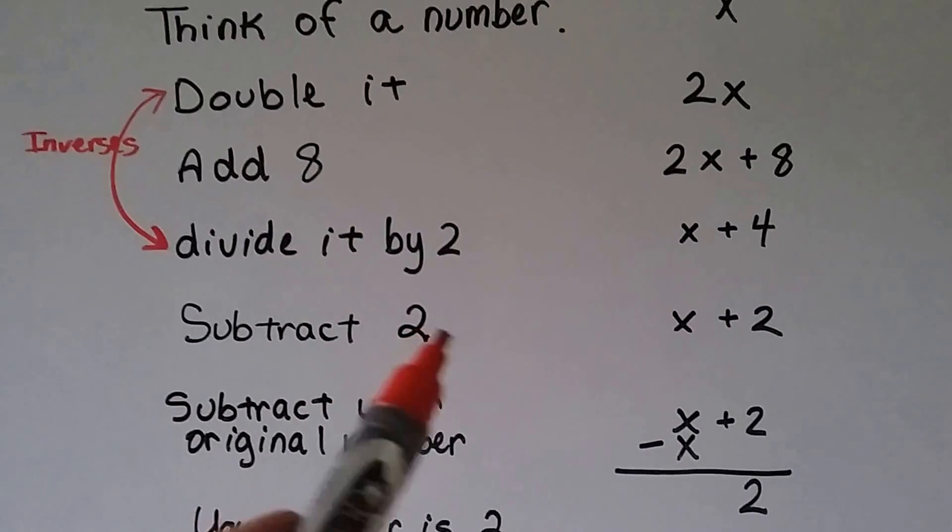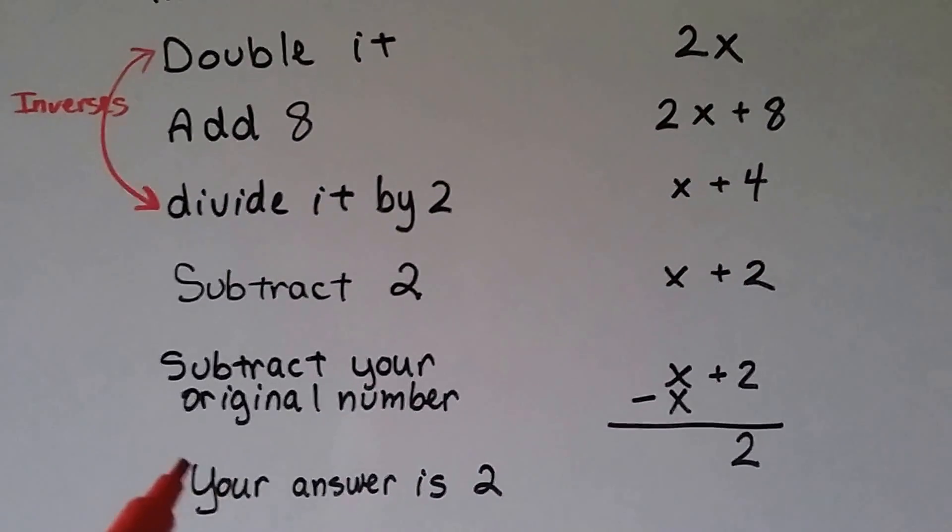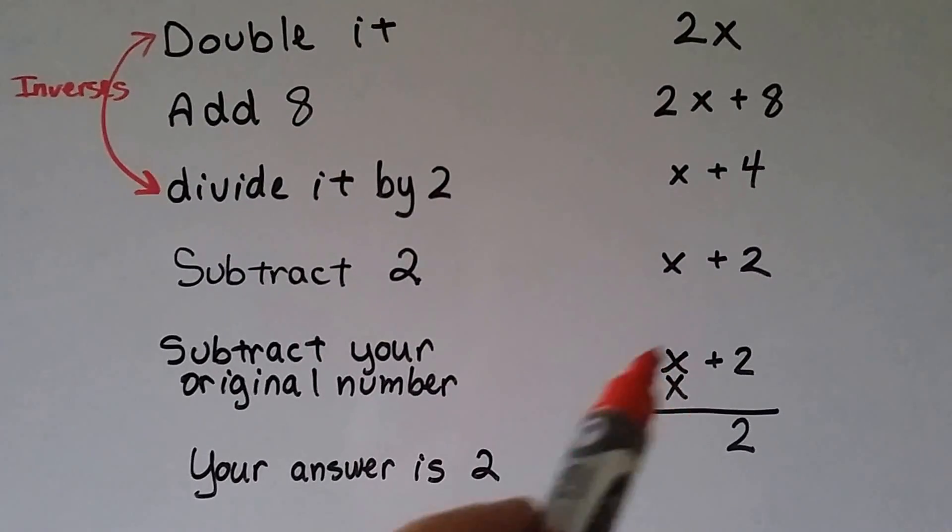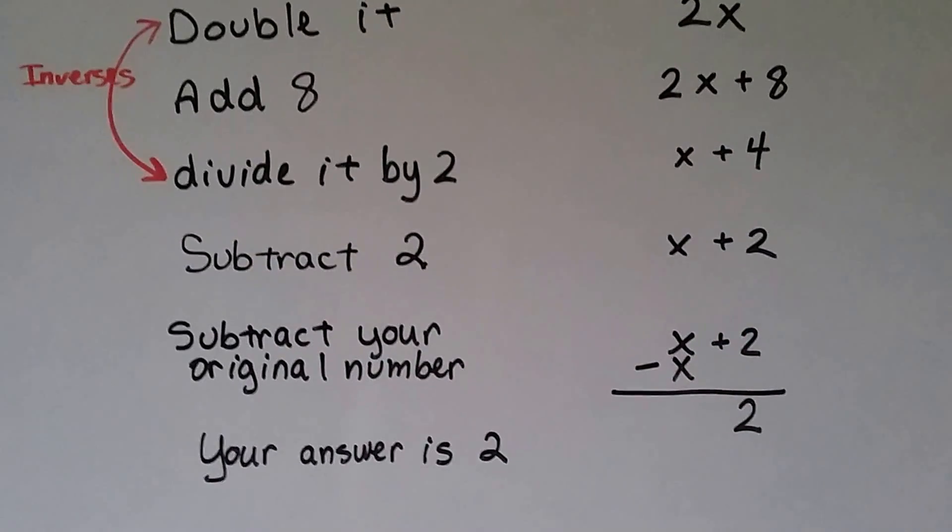Now subtract 2. Well, if we take 2 away from that 4, now we've got x plus 2. Subtract your original number. Let's take away the x. Your answer is 2. Well, of course it is, because that's what we had left over.